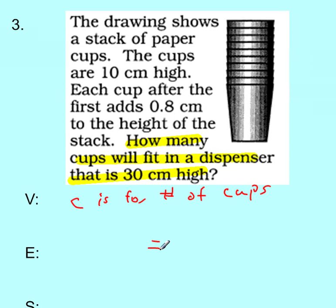And now let's read the rest of the problem. The drawing shows a stack of paper cups. The cups are 10 centimeters high. Each cup after the first adds 0.8 centimeters to the height of the stack. How many cups will fit in a dispenser that is 30 centimeters high? That's what everything can total. And then the cups are 10 centimeters high. So if you look at this picture here, the first cup is going to be 10 centimeters high. So we're going to take that, put it over here. But then we're going to add 0.8 per cup. So we're going to do plus 0.8 centimeters per cup. So that's going to be 0.8C.